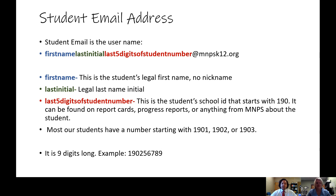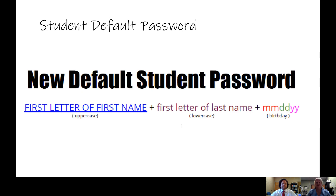Most of our students have a number starting with 1901, 1902, or 1903, and they're always nine digits long. If you have trouble finding your student's ID number, don't hesitate to reach out to the office or your student's homeroom teacher for help. The student's password is also a formula: the first letter of the first name uppercase, the first letter of the last name lowercase, then their birthday in digits. For example, if a birthday was January 1st, 2015, the digits would be 010115.